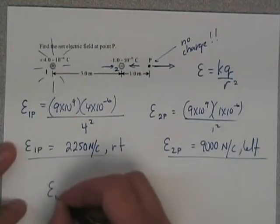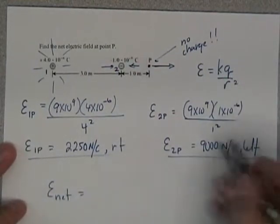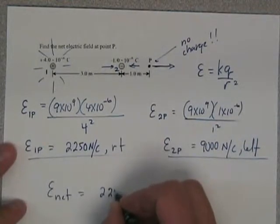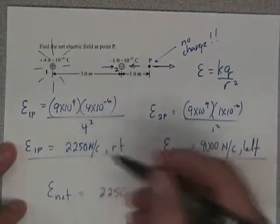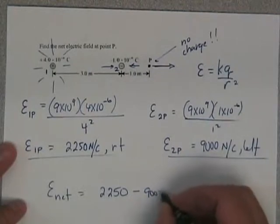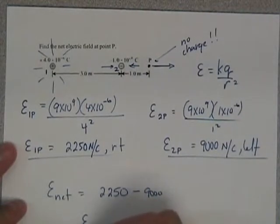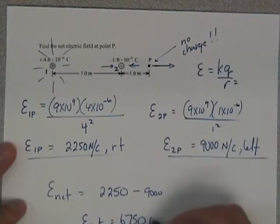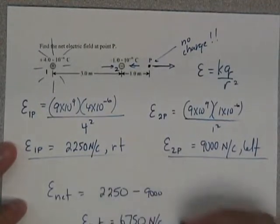So now when I find my net force, my E-net, I'm going to take my rightward electric field, 2250, and I'm going to subtract it from my leftward one, which is 9,000. In total, my E-net is going to end up being 6,750 newtons per coulomb, and it's overall left.